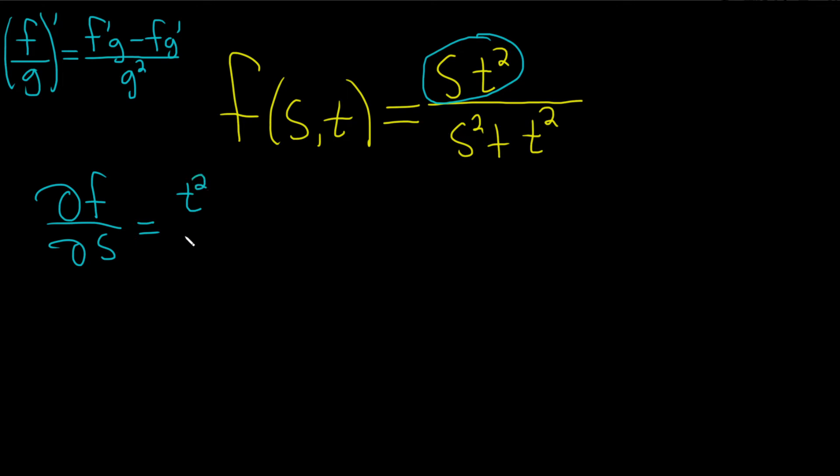That's the derivative of the top, then times the bottom so that'll be s squared plus t squared, minus the top, s t squared, times the derivative of the bottom which is just 2s because the derivative of t squared is zero since it's a constant.